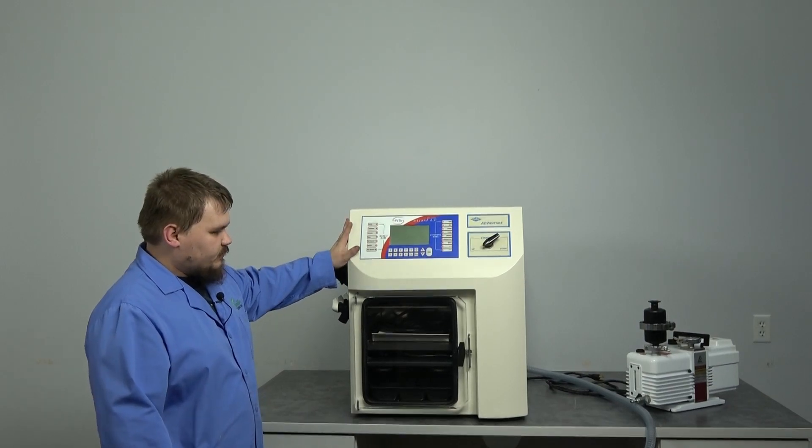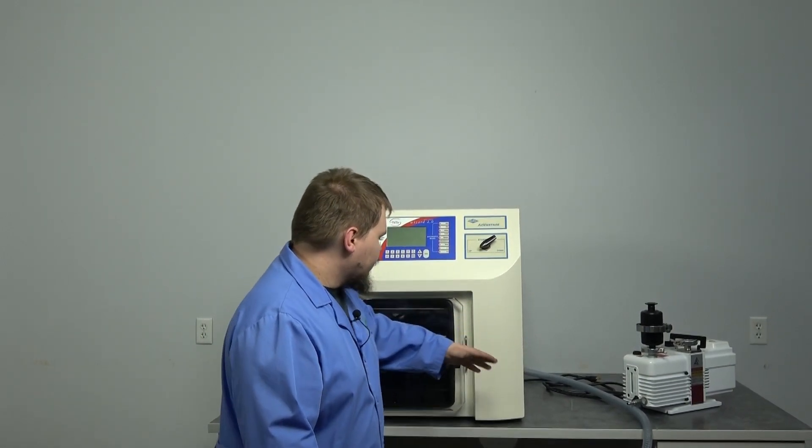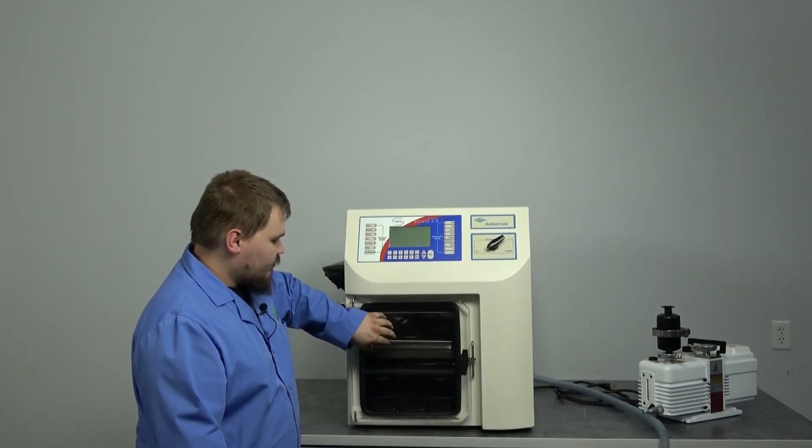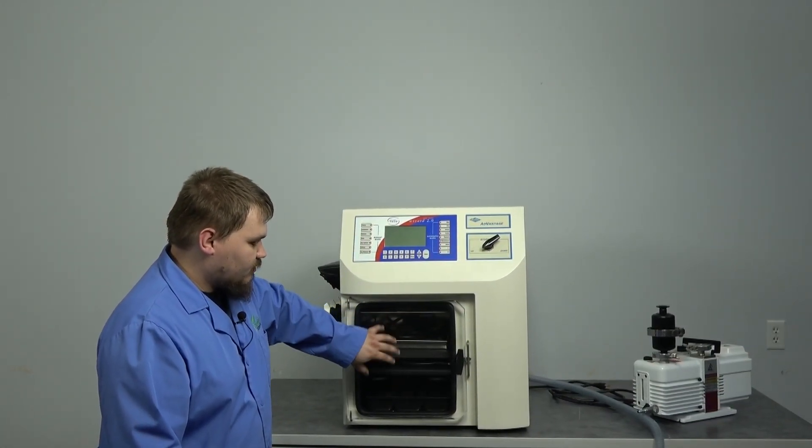We've got the machine here, we've got the vacuum pump, the power cord right back there, and a couple items here inside the machine.